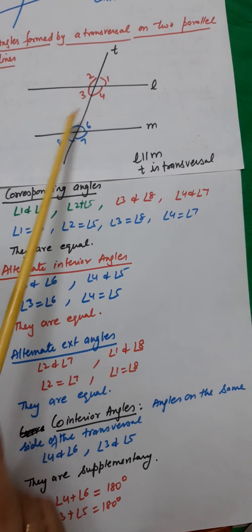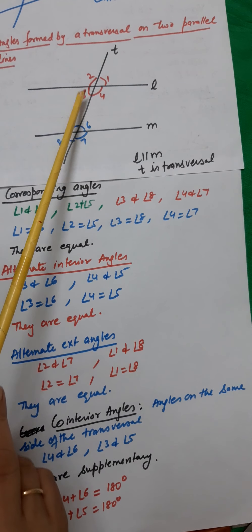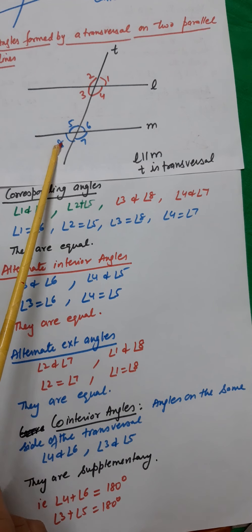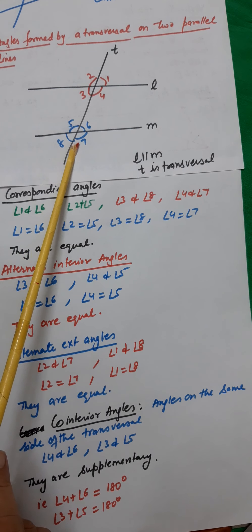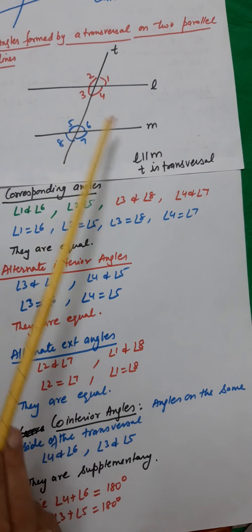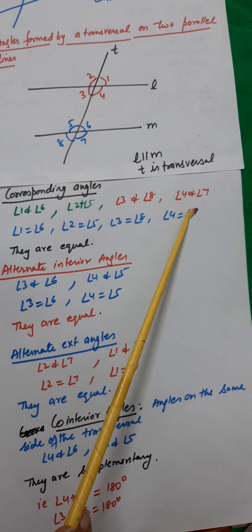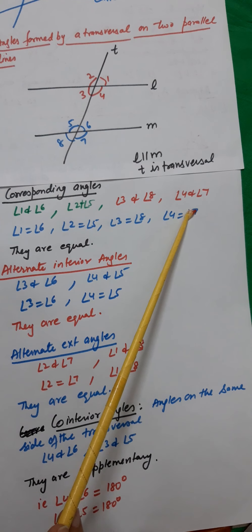Angle 3 is equal to angle 8 — suppose this is 60 degrees, this is also going to be 60 degrees. Angle 4 is equal to angle 7.